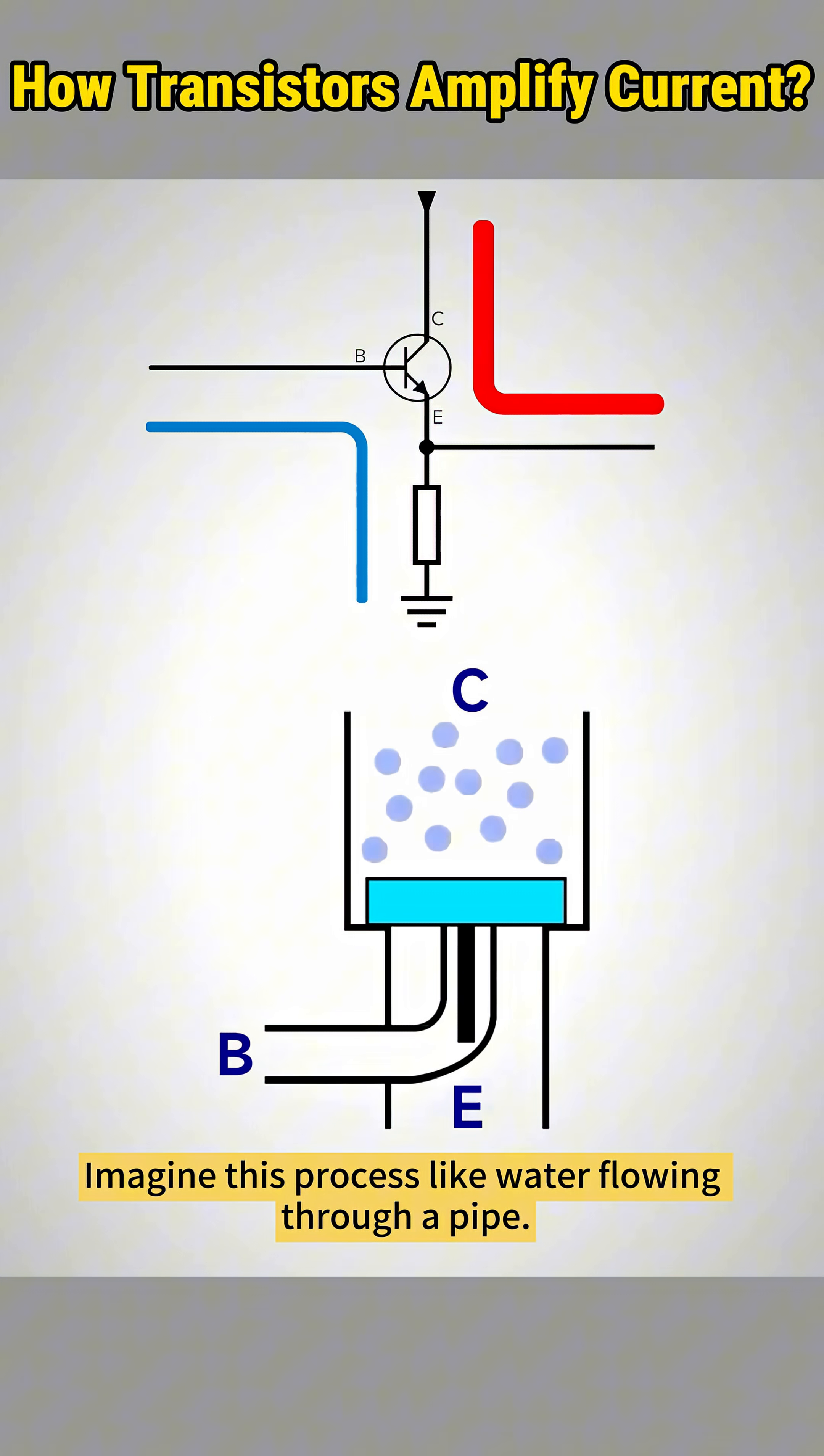Imagine this process like water flowing through a pipe. No base current, the piston stays shut. No flow from C to E.